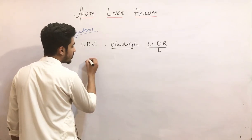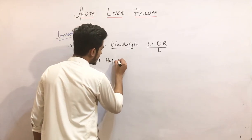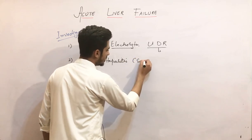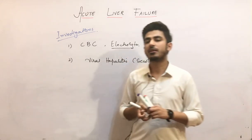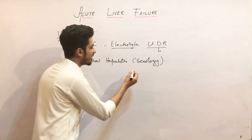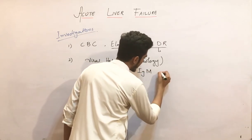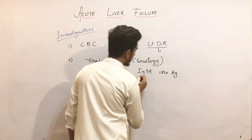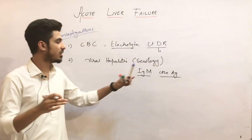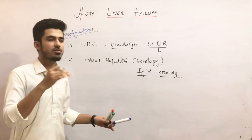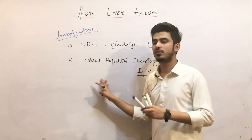In order to rule out viral hepatitis as a cause, you will do hepatitis serology screening. For example, in hepatitis B virus, the IgM antibody against the core antigen is very specific and the best marker for screening hepatitis B virus infection.